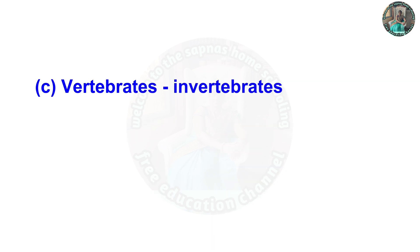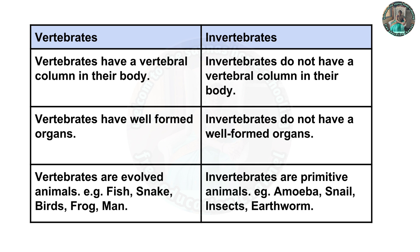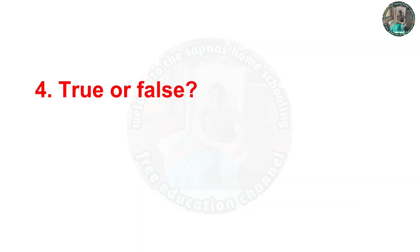C — vertebrates and invertebrates. First difference: vertebrates have a vertebral column in their body; invertebrates do not. Second: vertebrates have well-formed organs; invertebrates do not have well-formed organs. Vertebrates are evolved animals — examples: fish, snake, birds, frog, man. Invertebrates are primitive animals — examples: amoeba, snail, insects, earthworm.